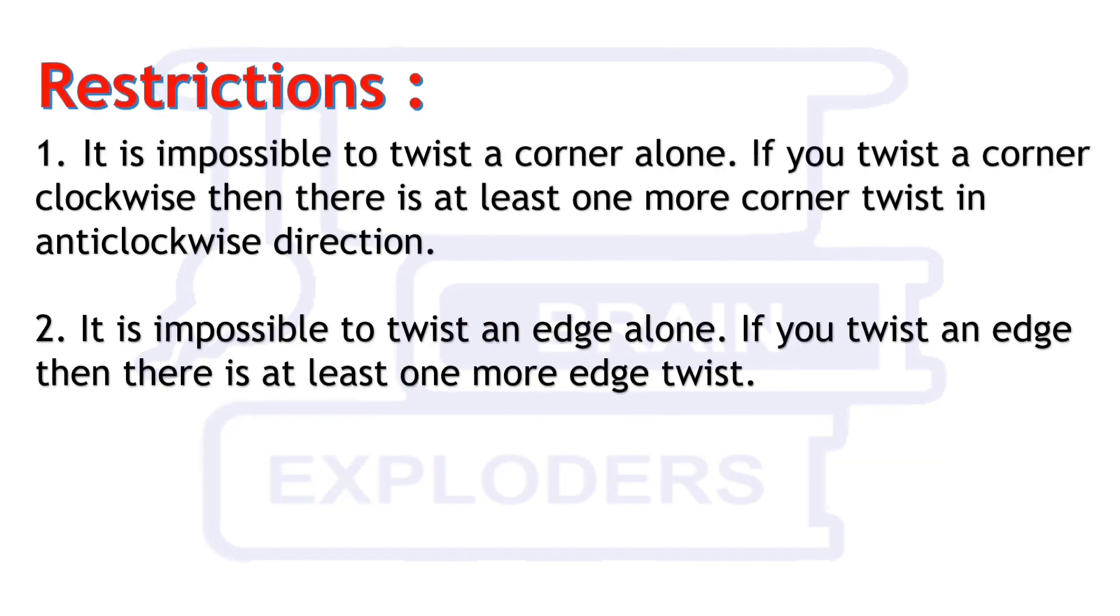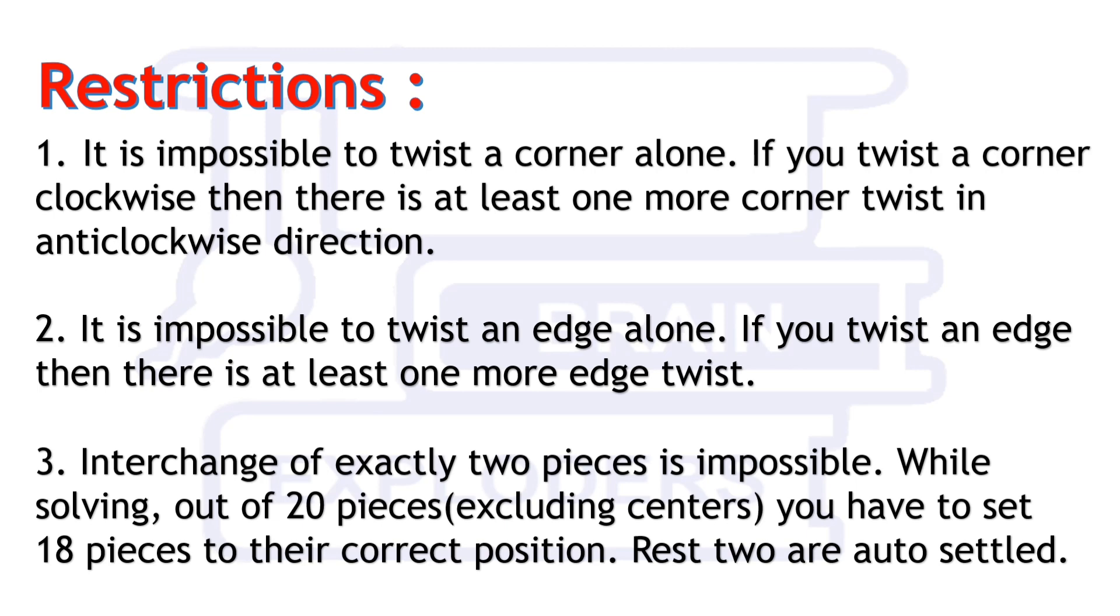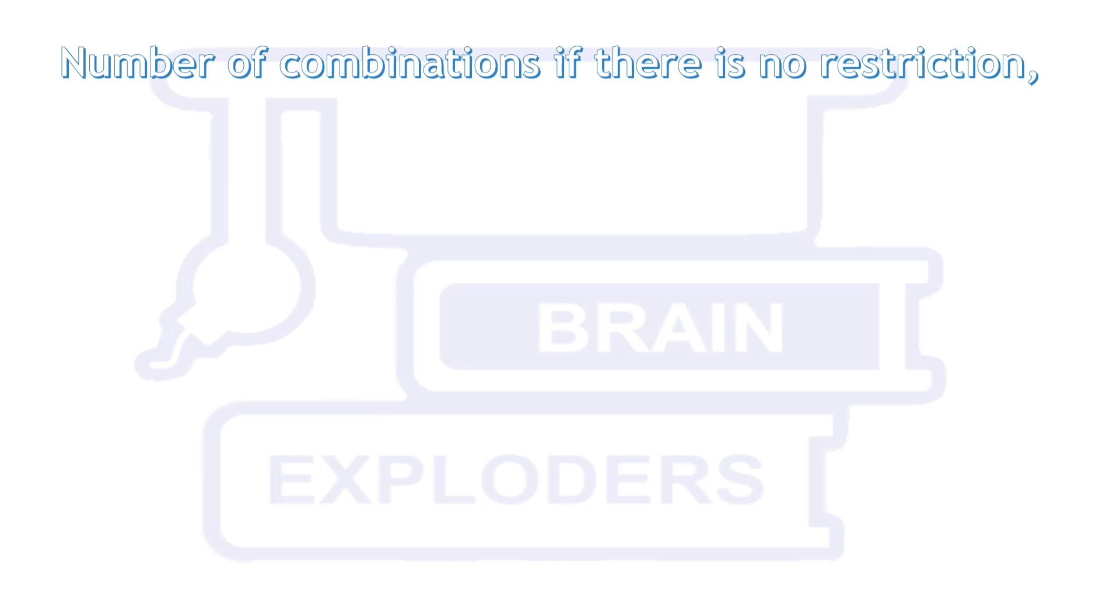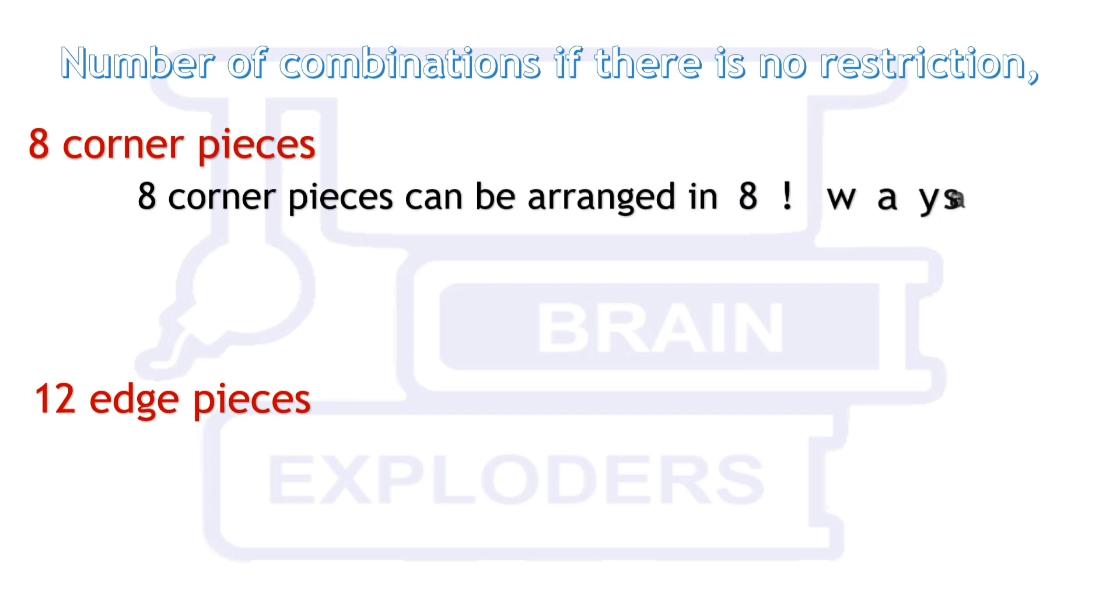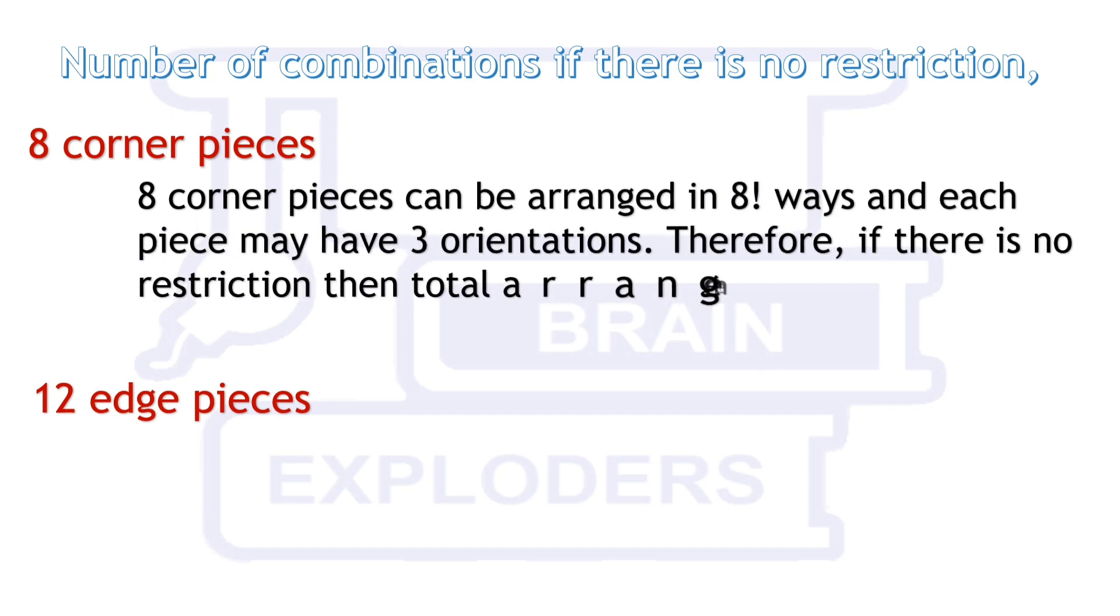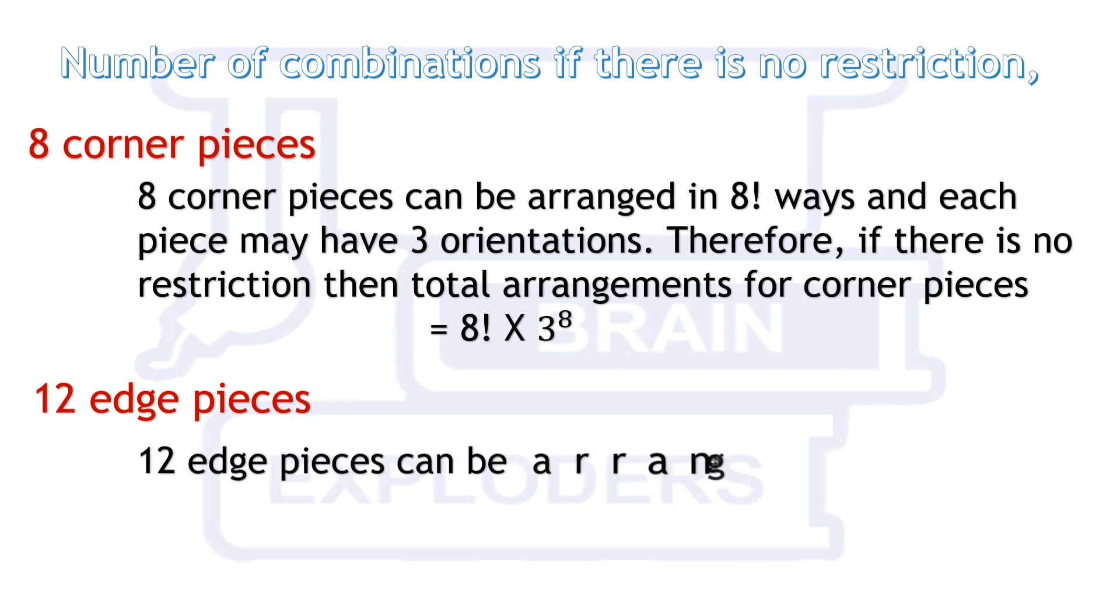So these are the restrictions. Now start counting the number of combinations. If there is no restriction, then eight corner pieces can be arranged in 8! ways and each piece may have three orientations. Therefore, if there is no restriction, then total arrangement for corner pieces is 8! × 3^8.